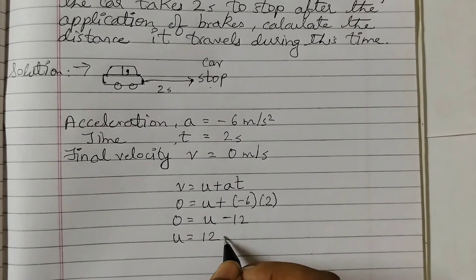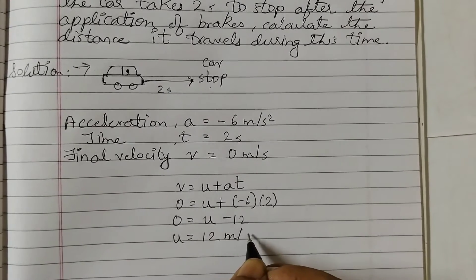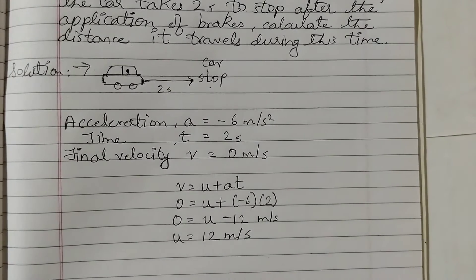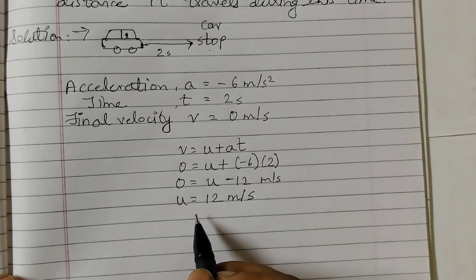Unit of velocity is meters per second. Now we found out the initial velocity.